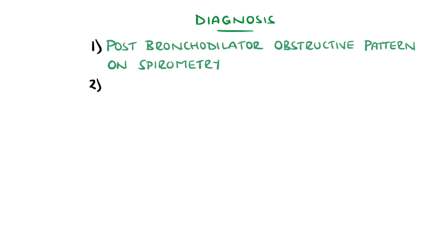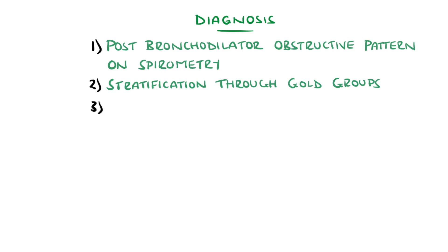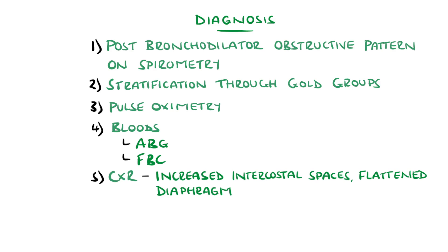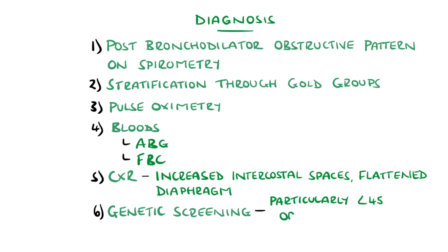Additional testing can include pulse oximetry. An ABG may be done to rule out respiratory failure and to help assess for long-term oxygen therapy. Other blood tests can include a full blood count to look for anaemia or polycythaemia as a result of chronic hypoxaemia. Chest X-ray is not diagnostic, but features an increased anterior-posterior ratio, large intercostal spaces, and a flattened diaphragm, which are suggestive of COPD. Genetic testing is not routinely done in practice, but patients under the age of 45 years, or in rapidly progressing cases, should particularly be screened for alpha-1 antitrypsin deficiency.